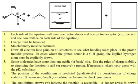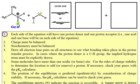Some things to notice about these particular equilibrium equations is that each side of this equation will have one proton donor and one proton acceptor — so just one acid and one base on each side of the equilibrium. And just like reactions, the charge and the stoichiometry must be balanced on both sides of the arrows.